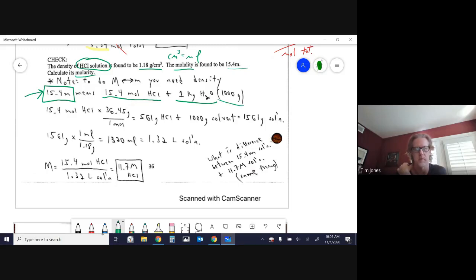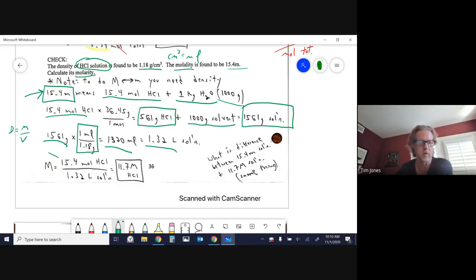I can take the moles of HCl, convert to grams of HCl. Since it was 15.4 molality, we can assume one kilogram, so that's a thousand grams of solvent. You add those together and now we know the mass of the solution. We can now use density. Here's my mass of solution, I use density as a conversion. You can do that or you can do d equals m over v if you prefer. That gives me my volume of solution, convert it to liters. And now we take the moles that we knew the entire time, divide by the liters, and we get 11.7.